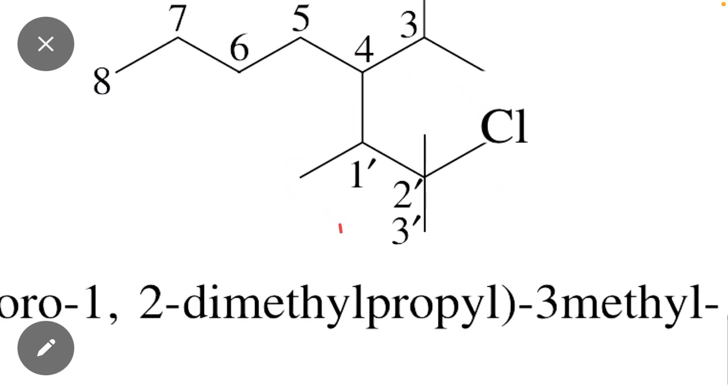The substituent numbering will be: carbon 1, 2, and 3. You can see that one line is present at position 2 and one line is present at position 1. This line shows methyl, meaning 1,2-dimethyl. There are total three carbons, that is why it's propyl.